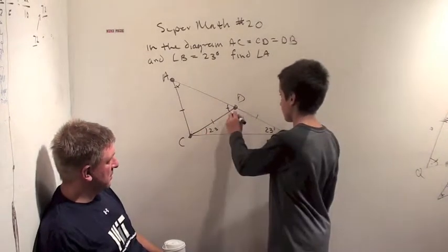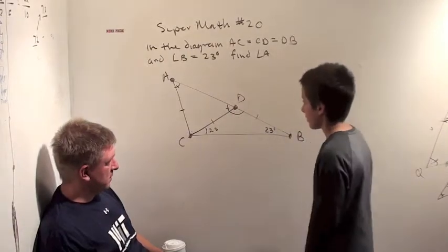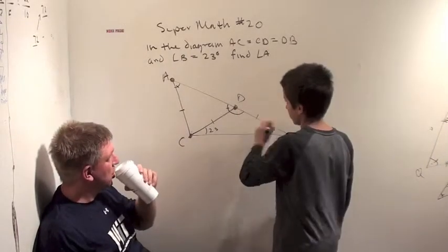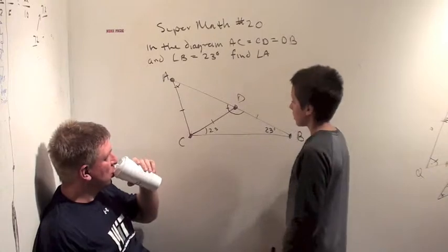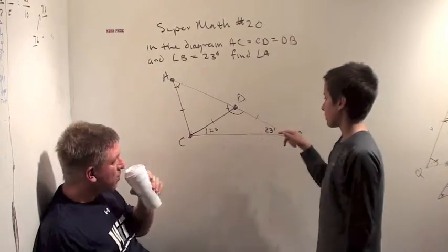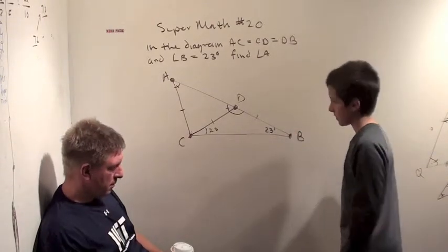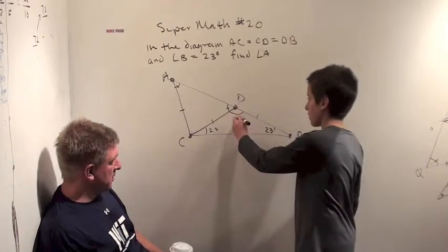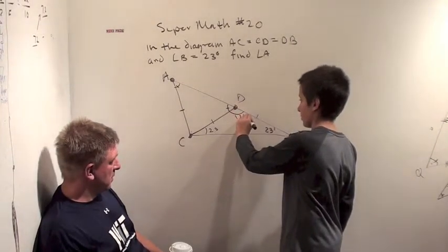So, we can figure out this angle, because this is a straight line. All right. So, 23 plus 23 is 46. So, this is going to be 134. All right.